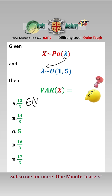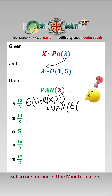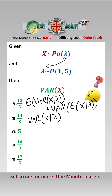Now Var(X|λ) is just equal to λ, because X is a Poisson distribution, and also E[X|λ] is λ again, because X is a Poisson distribution.